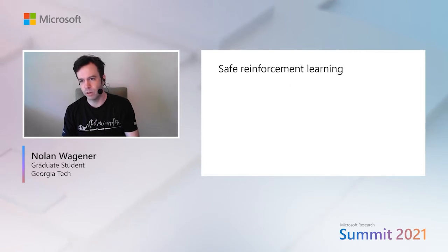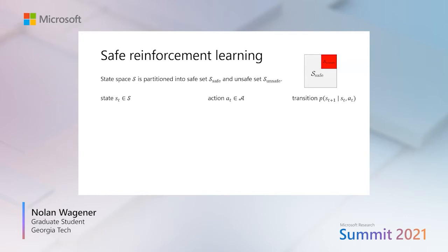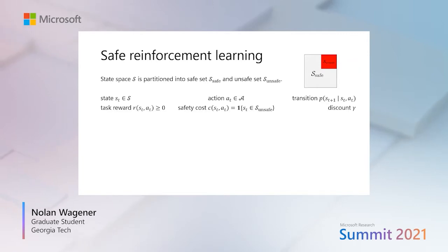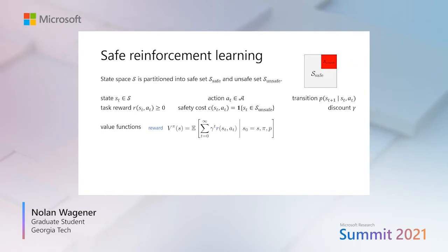For the safe RL problem setup, we assume the state space is partitioned into two sets: a safe set and an absorbing unsafe set, and we assume knowledge of these safe and unsafe sets. A state at time step T is denoted ST and an action AT. The transition is assumed to be stochastic. The task reward R is assumed to be non-negative, and we additionally define a safety cost, which is an indicator of whether we're in the unsafe set. We also include a discount factor gamma. We consider two value functions: the first corresponds to the usual reward function, and the second, denoted with a bar over V, corresponds to the safety cost function.